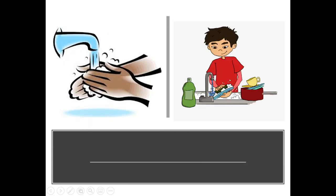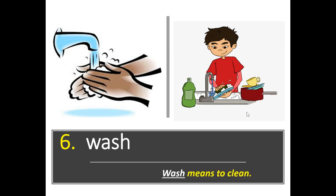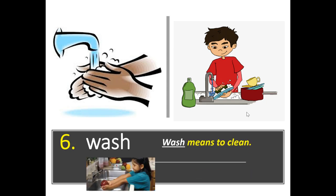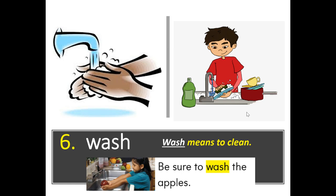Next pair of pictures. What do you notice or see, and how are these pictures the same or similar? I notice that this picture shows washing hands, and I notice that this picture shows washing dishes, so they're both washing something. Wash is word number six. Wash means to clean. Example: Be sure to wash the apples. How do I use it? Let's wash the clothes today. Do you like to wash the dishes? Honestly, I'm not a big fan of washing dishes, but they have to be done.